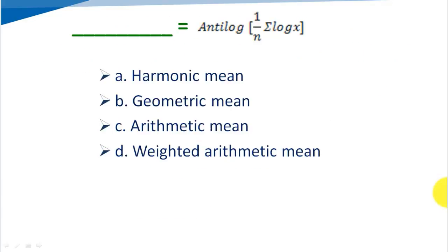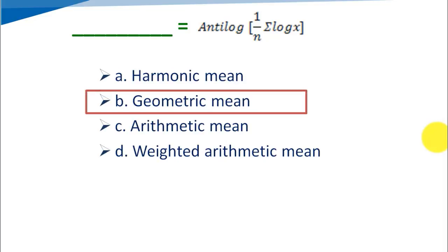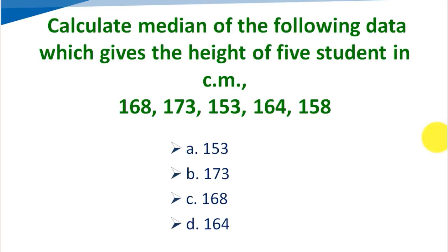The equation — blank = (1/n) × Σ log x — identifies which measure? Option A: harmonic mean, Option B: geometric mean, Option C: arithmetic mean, Option D: weighted arithmetic mean. The correct answer is Option B, geometric mean.